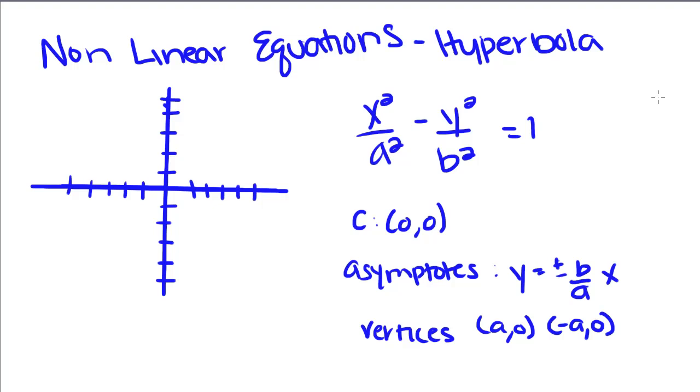It comes in the standard form x squared over a squared minus—that minus is really important because that's how we tell an ellipse apart from a hyperbola—minus y squared over b squared. So for this particular standard form of a hyperbola, the center is at (0,0).